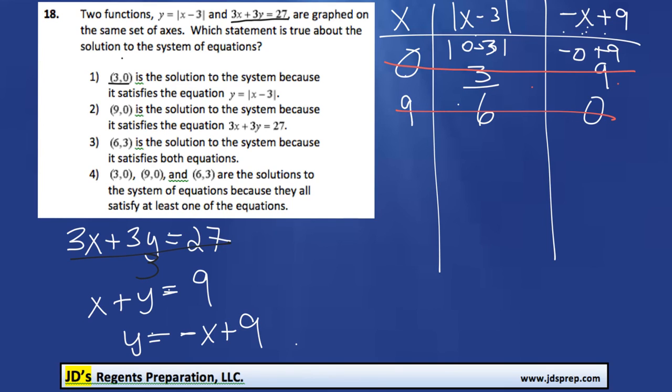Okay, let's try the third one: 6, 3. That means we're going to replace x with 6. The absolute value of 6 minus 3 is 3, and then negative 6 plus 9 gets us 3 as well. And look at that, exactly what we were looking for. 6, 3 works in both equations. Therefore, the correct answer is option number 3.